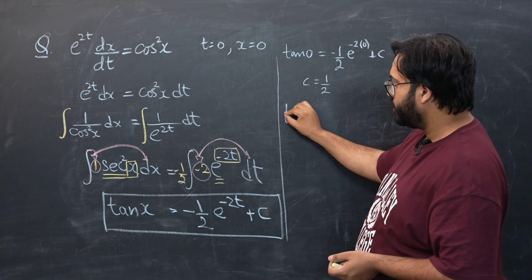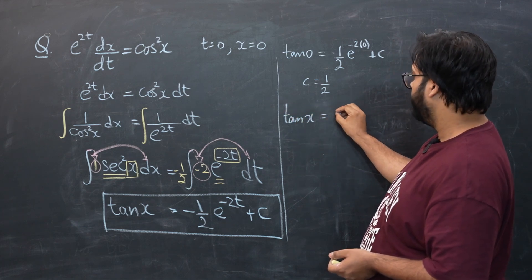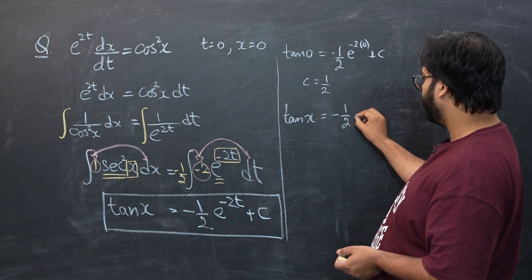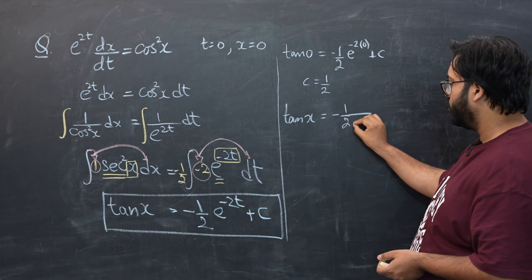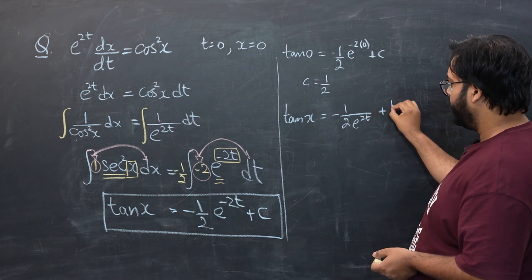So tan x is equal to -1/2 e^(-2t). I'm going to bring that to denominator as well. E^(2t) plus 1/2. So this is our final answer.